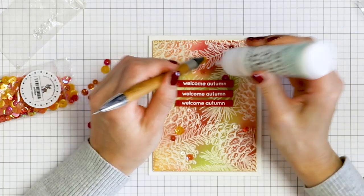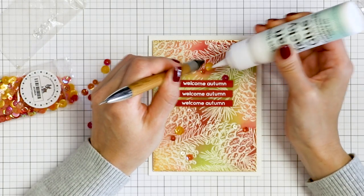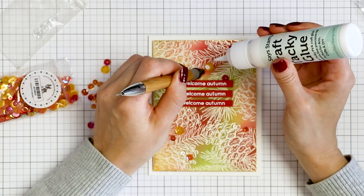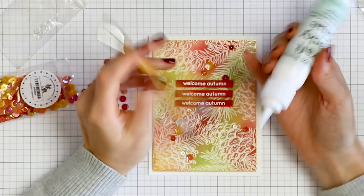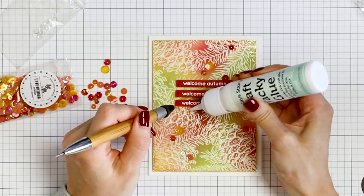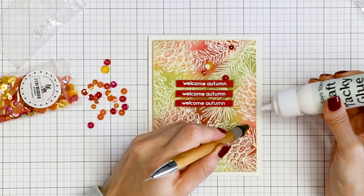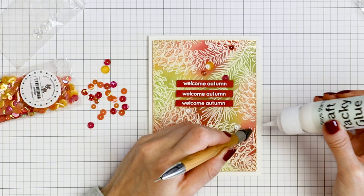Lastly, I'm going to decorate the card using some sequins and clear droplets. I'm using the Autumn Leaves sequin mix and adhering everything in place with the help of my Crystal Katana pickup tool and Simon's craft tacky glue. And our card is done!